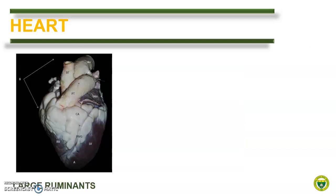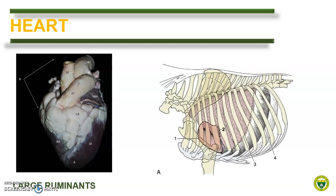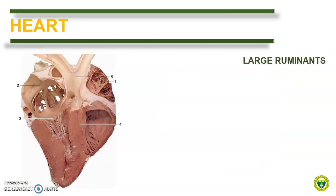The heart of large ruminants is constructed according to the general mammalian plan and exhibits no distinctive structural features of importance. However, it is relatively fatty compared with other species. Here we have an image of a heart of a Philippine carabao. Please note the fatty tissues at the base of the heart. The heart extends from the second intercostal space or the third rib to the fifth intercostal space. Take note that the landmark can be the intercostal space or the rib itself.